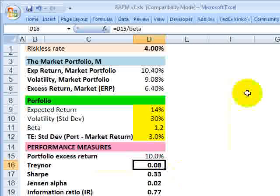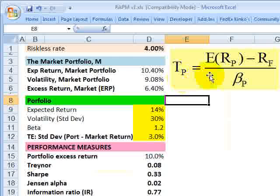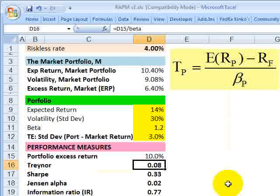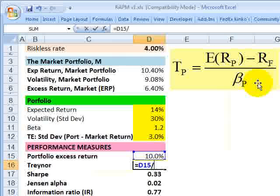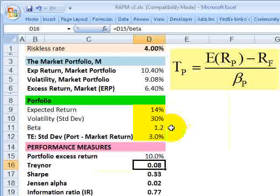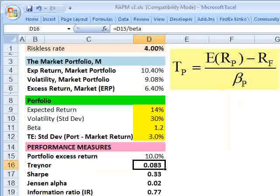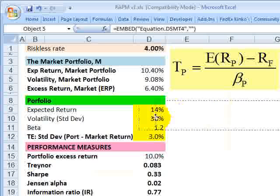First, the Treynor measure. Let me just pull that formula out here because it's really straightforward. The Treynor measure is the portfolio's excess return - see how the numerator is that excess return? Expected return of the portfolio minus the risk-free rate divided by the beta of the portfolio. So that ends up being pretty straightforward here. For the Treynor, we take that portfolio excess return, that's the numerator, we divide by the beta in this case of 1.2. So we're risk-adjusting the excess return and we get 0.08 or 8%, or about 8.3%.